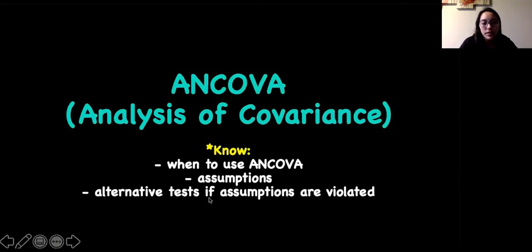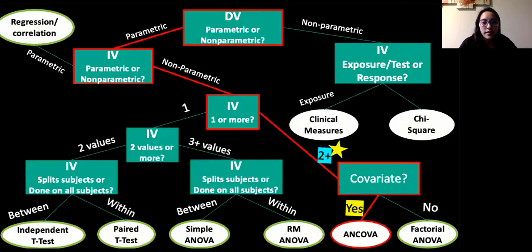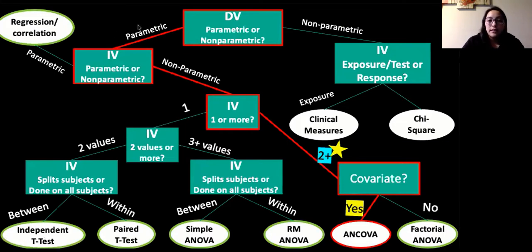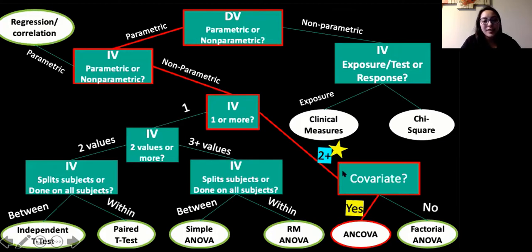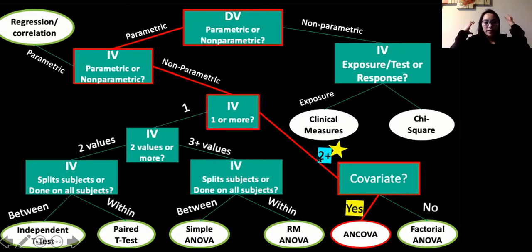For ANCOVAs, we want to know when to use one, the assumptions, and any alternative tests if assumptions are violated. Just to give you an idea of where this is in our flowchart: we're still operating with a single dependent variable that is parametric — ratio or interval data — and an independent variable that is non-parametric or nominal. We're tracking from factorial ANOVAs where we had two or more independent variables, which were pretty solid examples and easy to grasp.